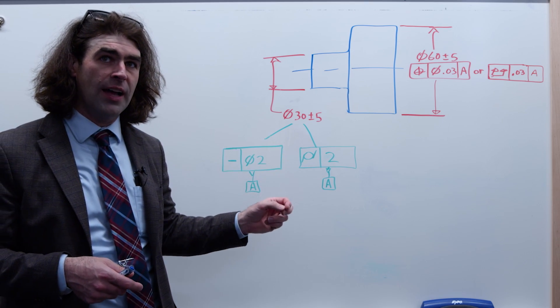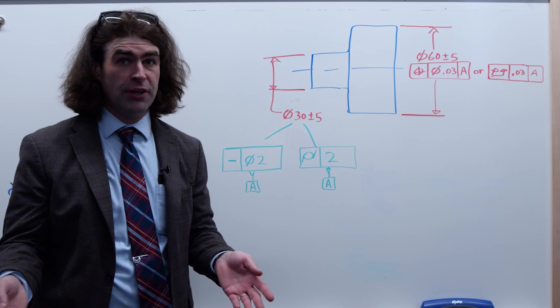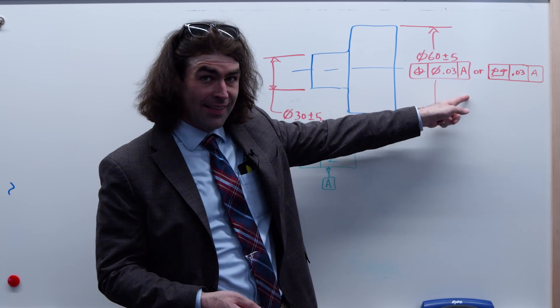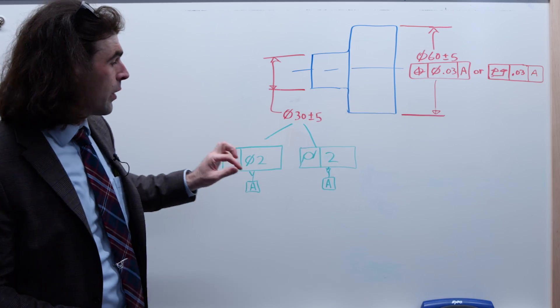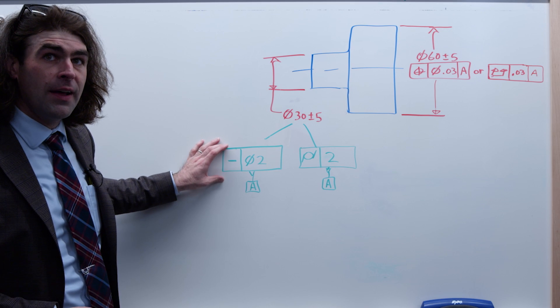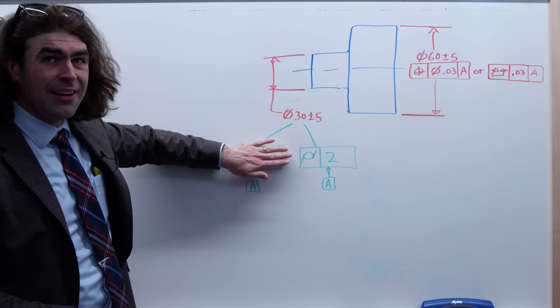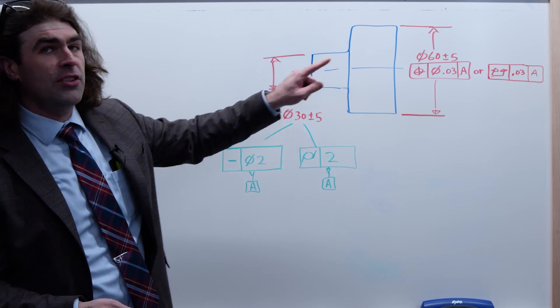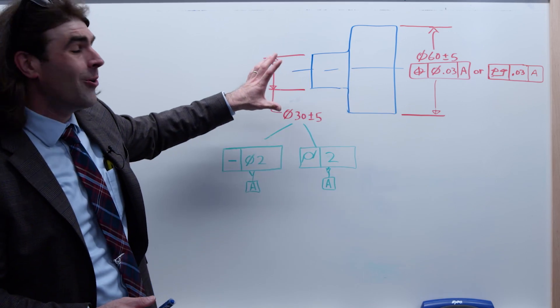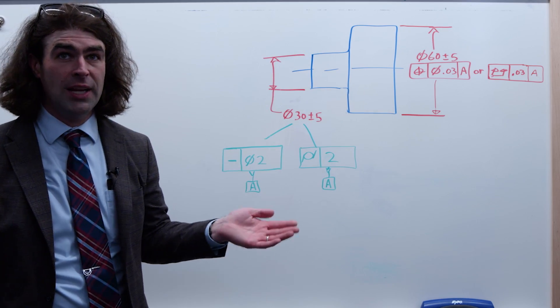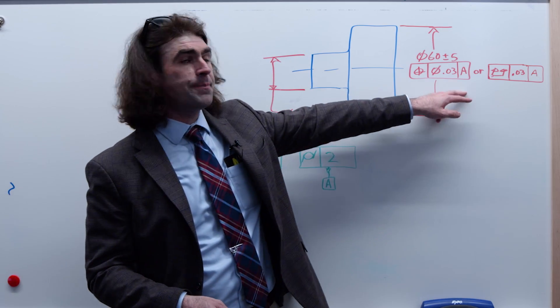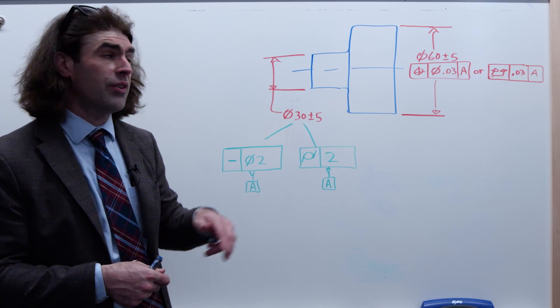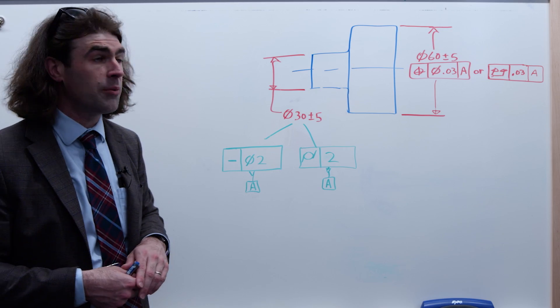So straightness of the derived median line applies to a feature of size. But the thing we're referencing over here is still an axis, okay? So we're going to make sure our derived median line is within this limit and then this kind of goes away for inspection. What I mean is we check this but to check that position we're going to simulate this cylinder the same way we would any other cylinder, right? Because it's called out regardless of material boundary we need a collapsing cylinder to check this. The straightness has nothing to do with that, okay?